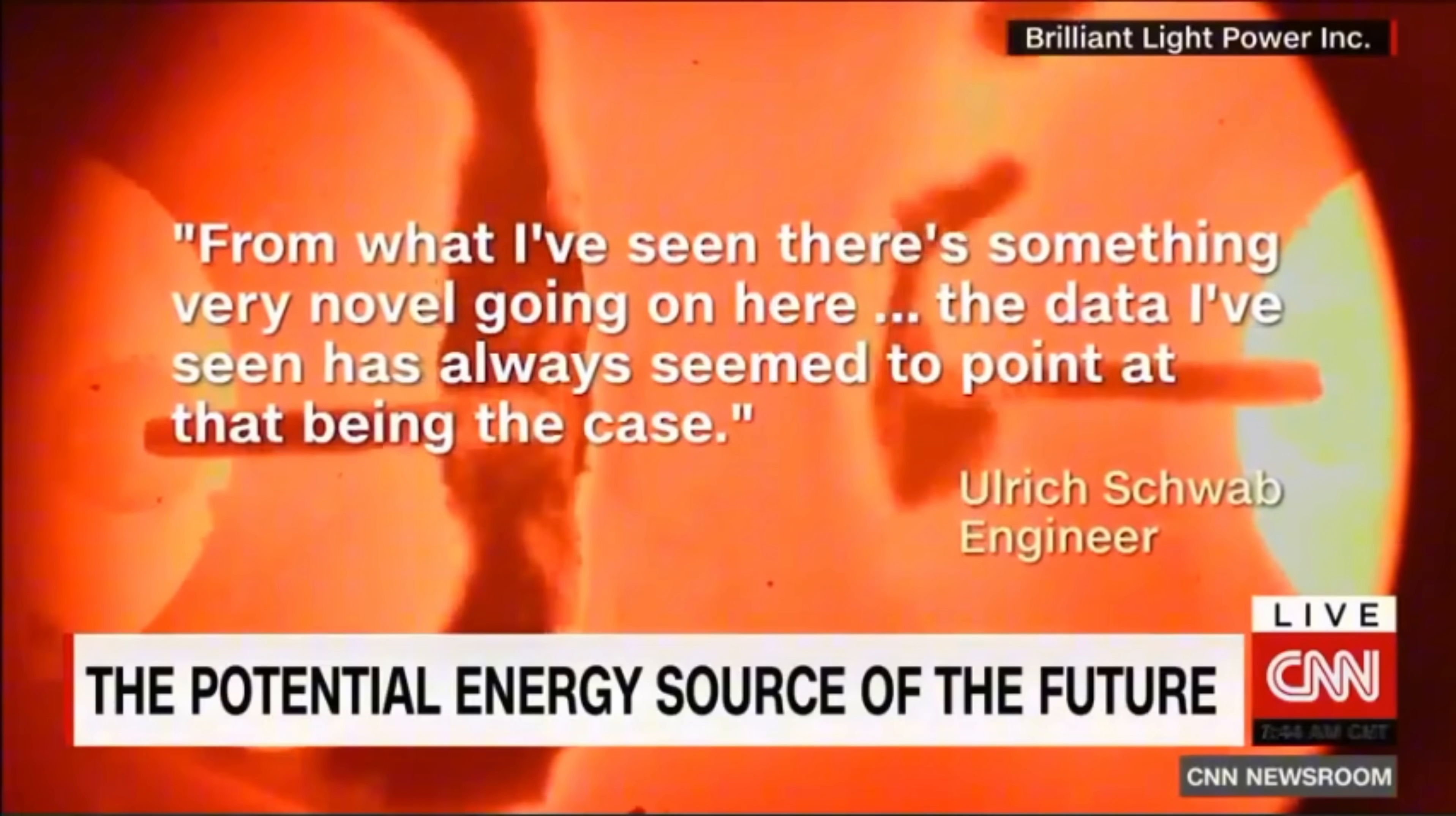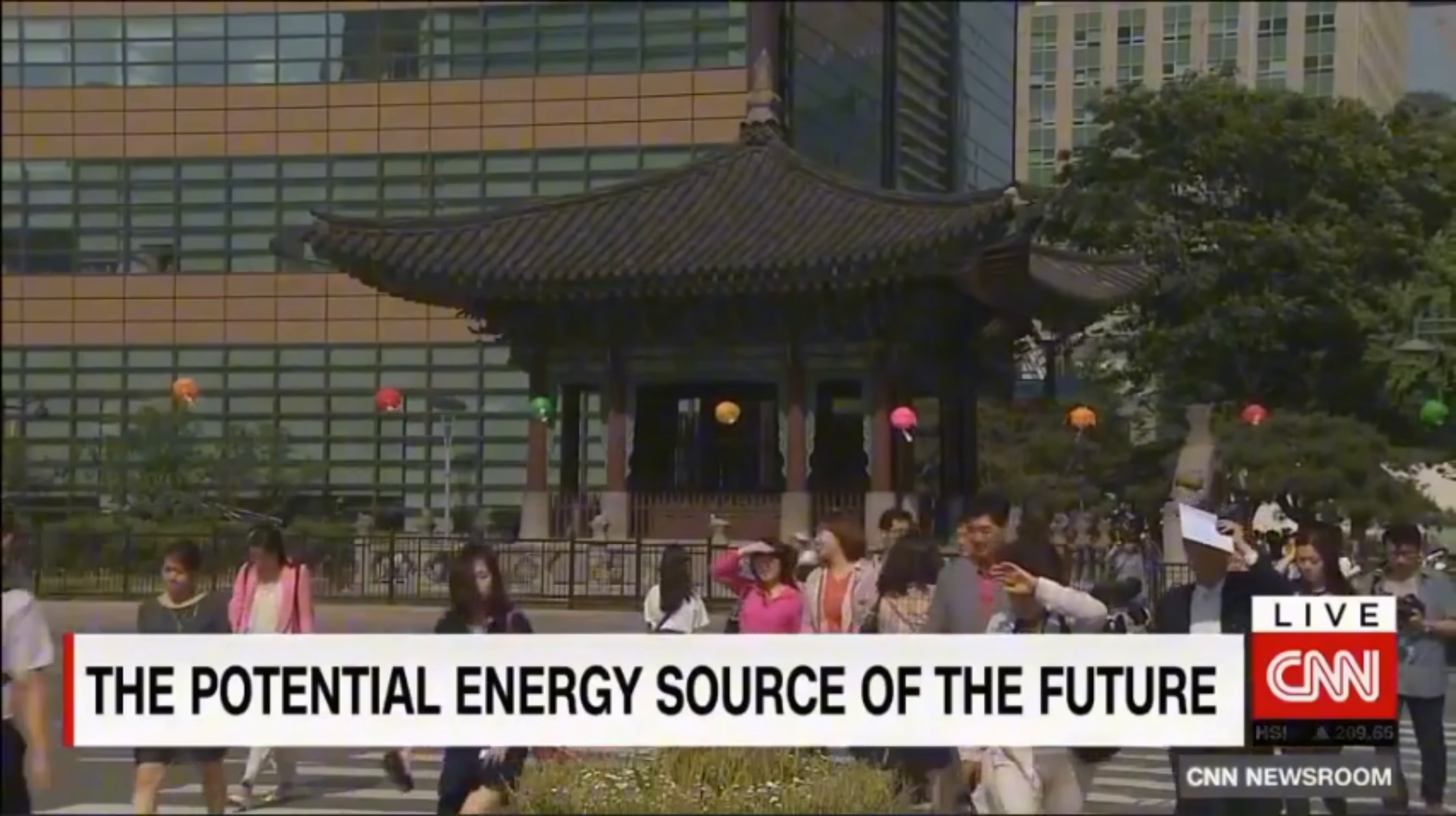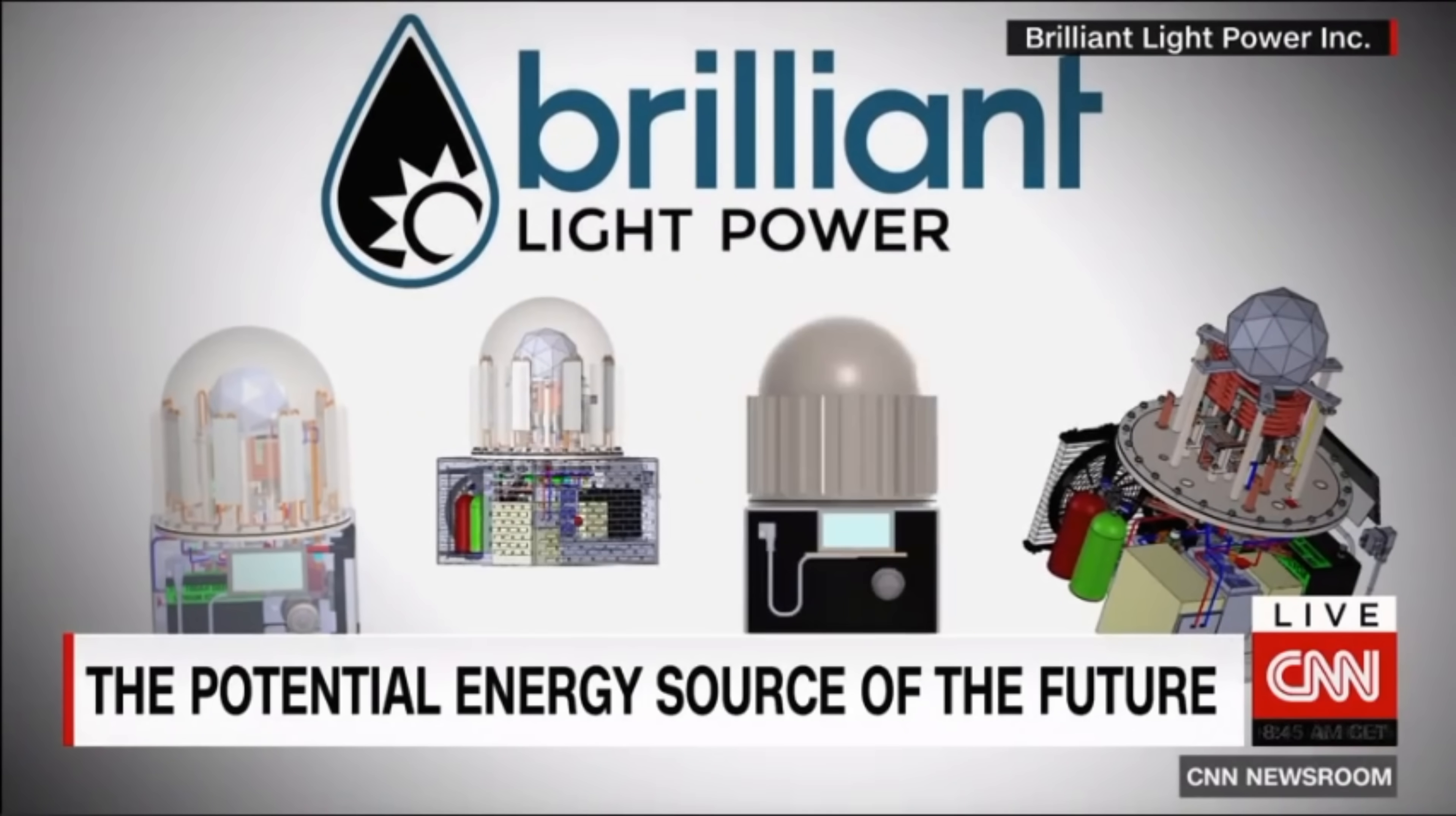But the true promise of Brilliant Light Power lies in its ability to transform the developing world. Billions of people around the globe still lack access to reliable electricity. Centralized power grids often can't reach remote rural areas. Brilliant Light Power's modular, distributed design means that individual homes and communities can be powered without the need for massive infrastructure projects. This has profound implications for global development, healthcare, education and quality of life. Suddenly, the dream of universal access to clean, affordable energy becomes a realistic possibility.